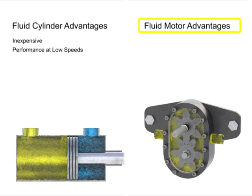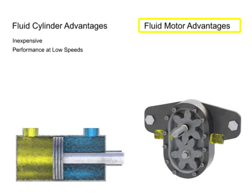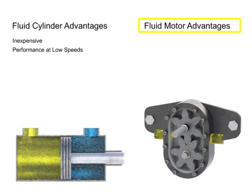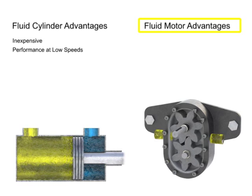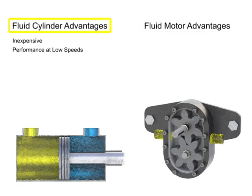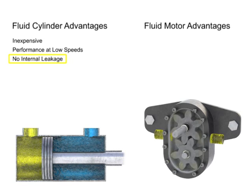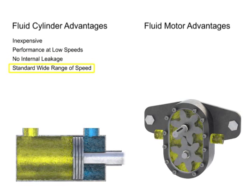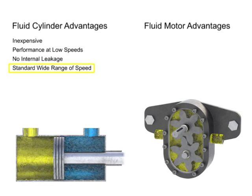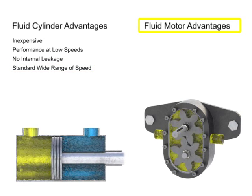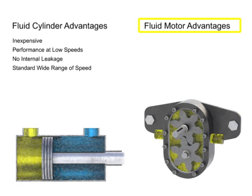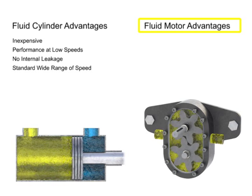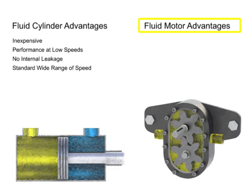Fluid motors, on the other hand, have metal-to-metal internal surfaces, which use a small amount of leakage for lubrication purposes. A cylinder with leak-tight seals can be operated over a wide range of speed, under changing loads, and with reasonably consistent performance. A fluid motor can only perform similarly if it's designed with precision tolerances to reduce its natural internal leakage, which increases cost.